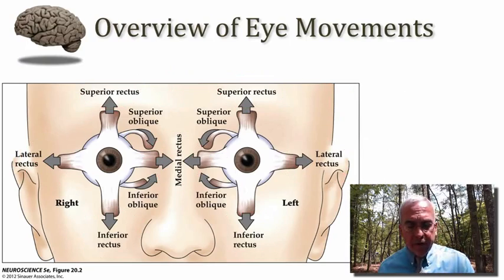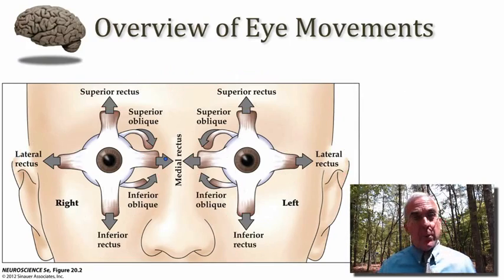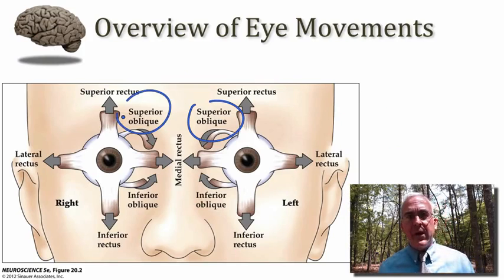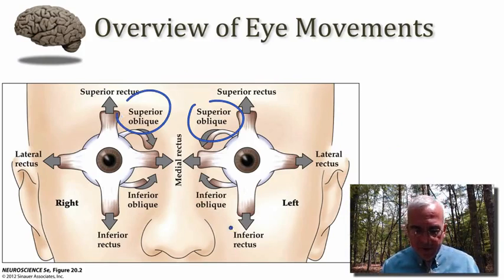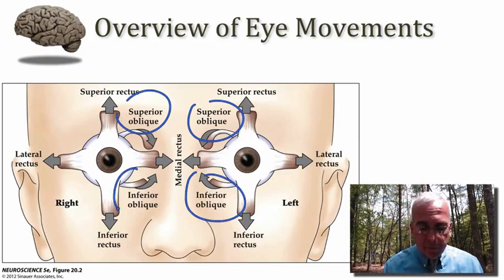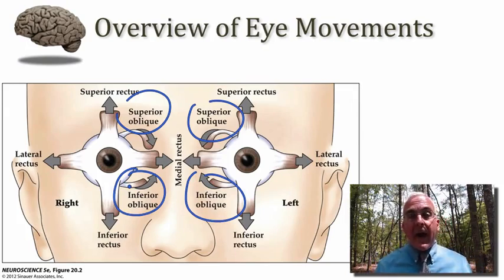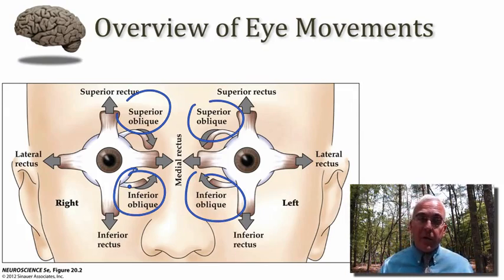In addition to the rectus muscles, we have two oblique muscles. There are superior oblique muscles that turn the eye downward and inward, and then there are inferior oblique muscles that rotate the eye outward and upward.